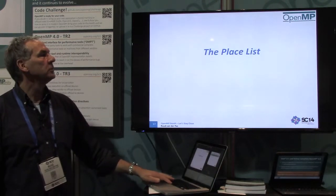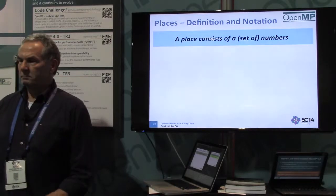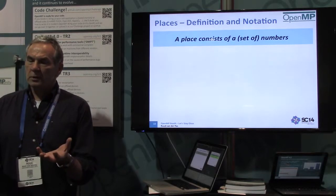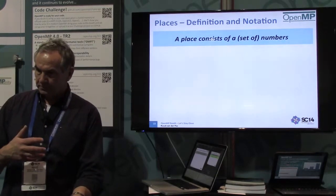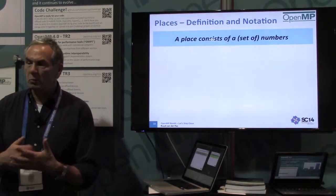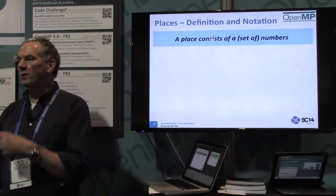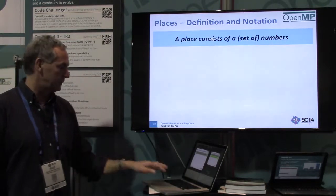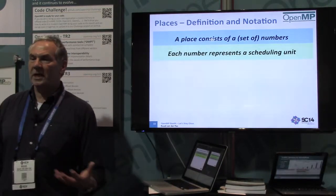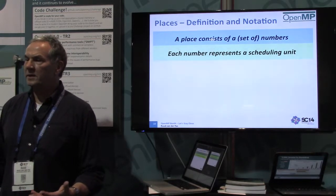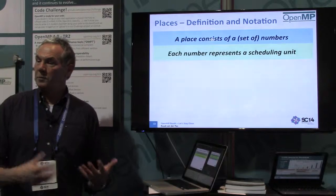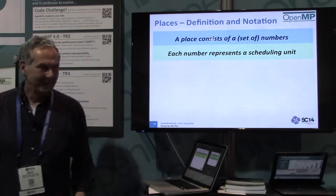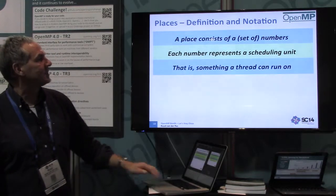This is a two-step process: you've got your place list and your affinity policy. A place consists of a set of numbers corresponding to what the hardware has. You need to know — for example, that hardware thread five is on socket zero, core one. I call that a scheduling unit: a number means that's something that can run my thread. It doesn't have to be a hardware thread — it could be basically any execution vehicle. That's a place.